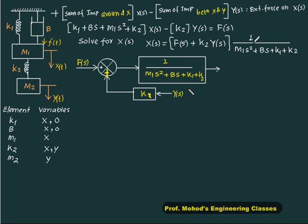Thus this block I have written inside this one. So what is the result here? My result is f of s plus k2 into y of s, and then whole block is multiplied, so I get the output here equals to x of s. So this output is x of s.